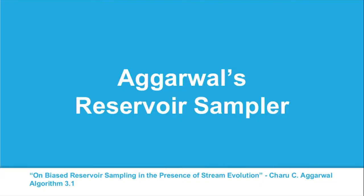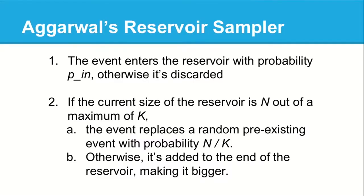We are not the first people to think about biased reservoir sampling. This algorithm by Chinua Garbal has some very interesting and nice properties. For two reasons it's not what we wanted, but it's still interesting. In the algorithm, there's one parameter called p_in. A new event enters the reservoir with probability p_a — let's assume that's 1.0, so every event enters.